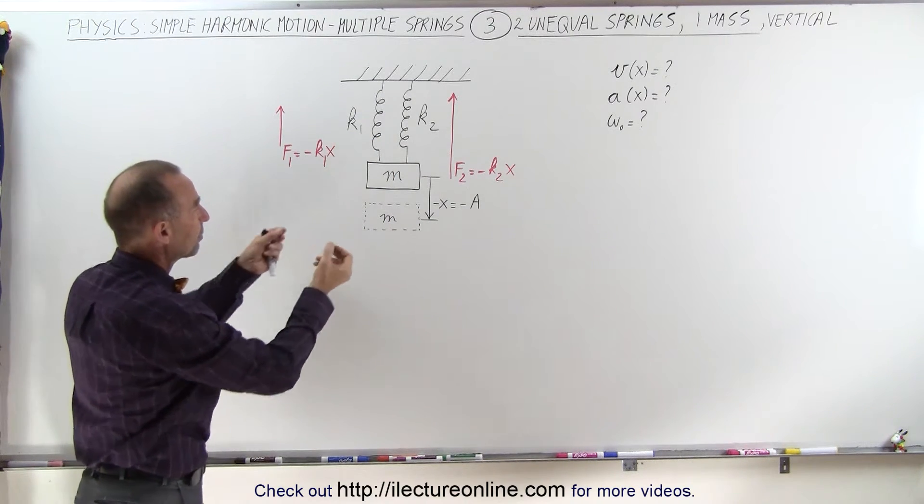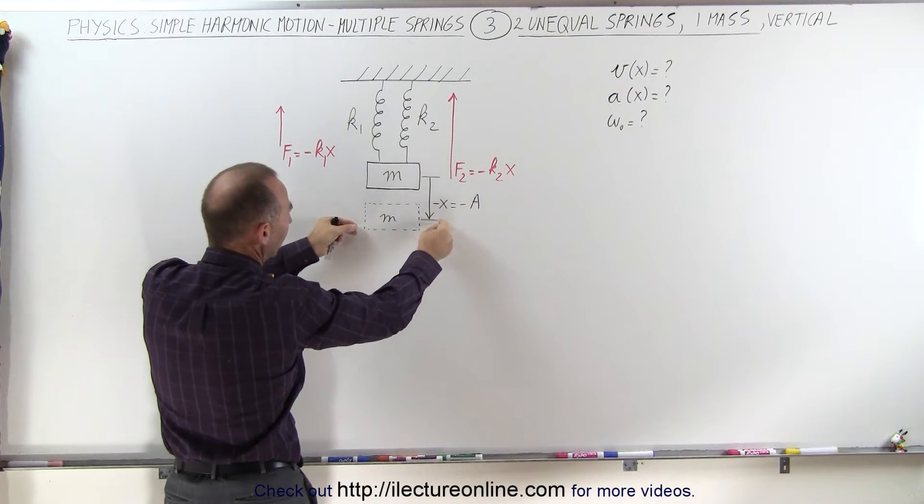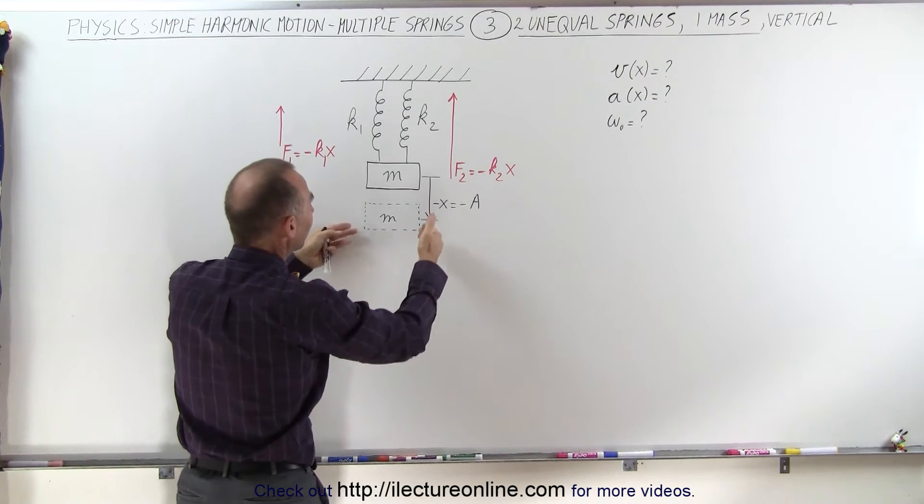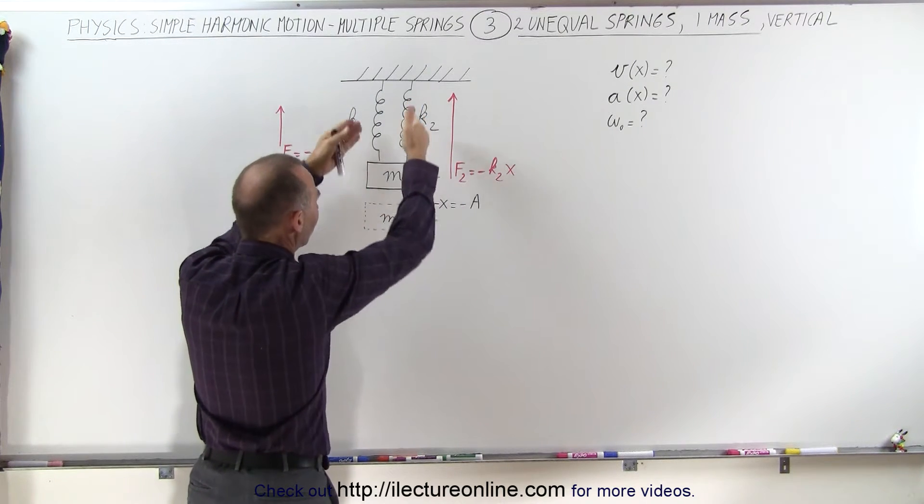Now, once it's in equilibrium, we're going to take the mass, pull it down a certain distance, let's say minus x equals the maximum amplitude minus A, then we'll let go, and the object will oscillate up and down.